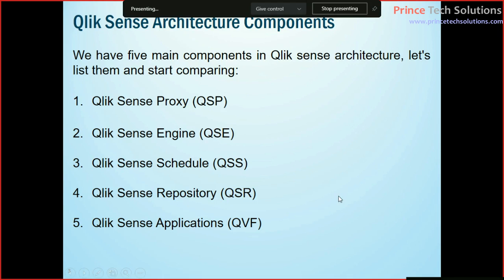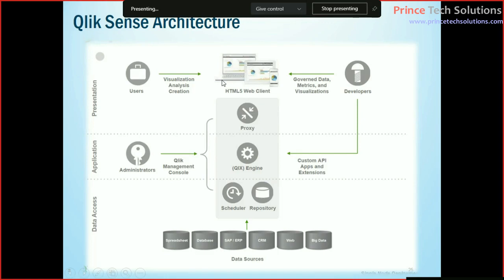The proxy nomenclature is self-explanatory — something which delegates between two different environments is called a proxy. QlikSense Cloud and Development Environment is one side, and QlikSense Output — which is an HTML5-based web client — is the other. The QlikSense Engine is what we are majorly working on. The proxy handles how a QVA file will be converted to a QlikSense client, which is an HTML-based interface — that's the responsibility of the proxy.